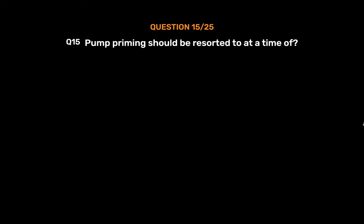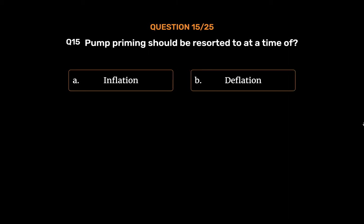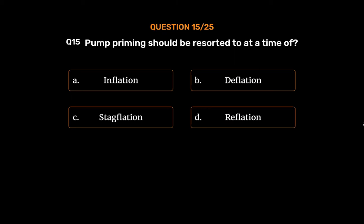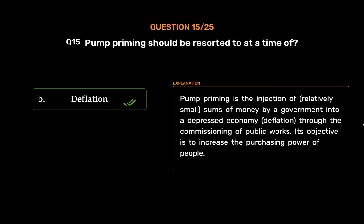Question No. 15. Pump priming should be resorted to at a time of. Option A: Inflation. Option B: Deflation. Option C: Stagflation. Option D: Reflation. The correct answer is Option B: Deflation. Pump priming is the injection of relatively small sums of money by a government into a depressed economy (deflation) through the commissioning of public works. Its objective is to increase the purchasing power of people.